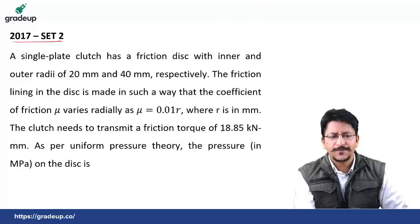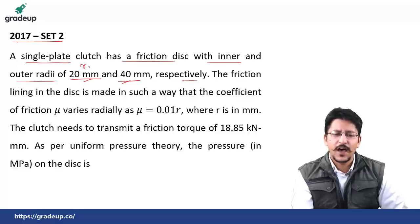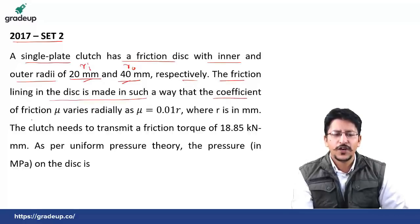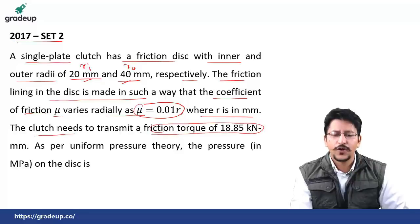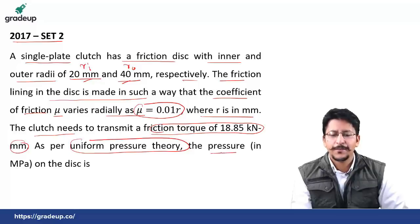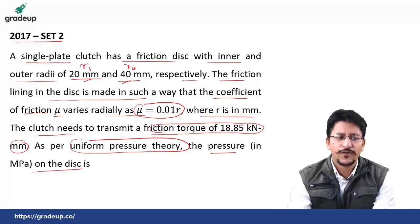Next question, 2017 Set 2: a single plate clutch has a friction disc with inner radius Ri = 20 mm and outer radius Ro = 40 mm. The coefficient of friction μ varies radially as μ = 0.01R, where R is in mm. The clutch needs to transmit a friction torque of 18.5 kilonewton·mm. As per the uniform pressure theory, the pressure in megapascal on the disc is to be found.